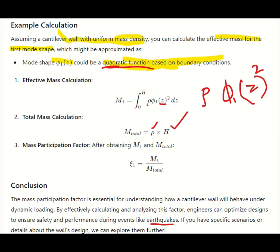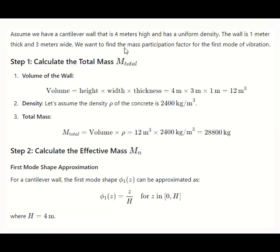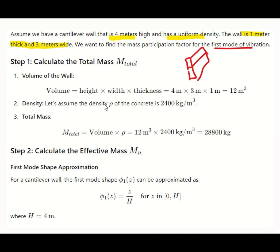Here we assume a cantilever wall that is 4 meters high with uniform density. The wall is 1 meter thick and 3 meters wide. We want to find the mass participation factor for the first mode of vibration. First, we calculate the total mass using height, width, and thickness — giving the total volume — and assuming a density of 2400 kg/m³, the total mass is 28,800 kg.